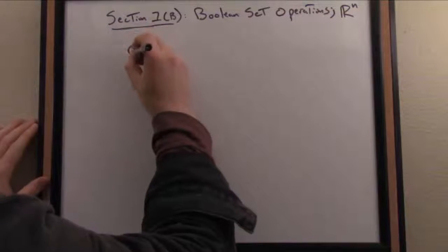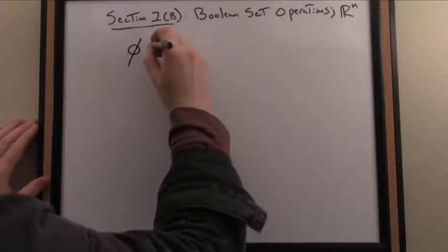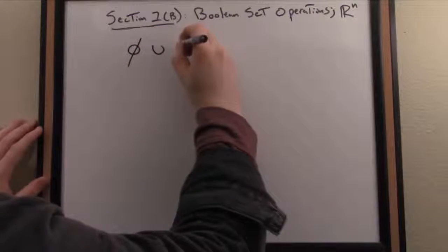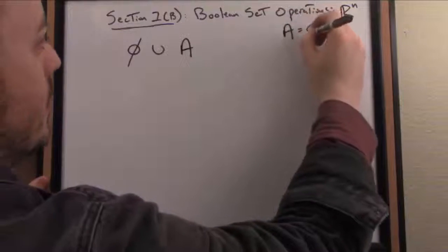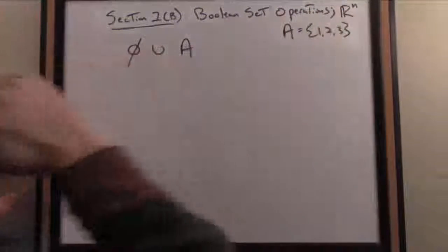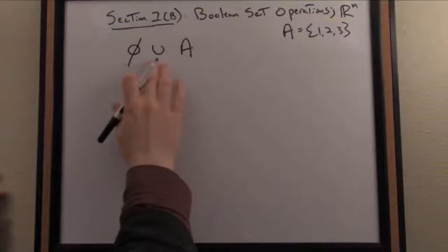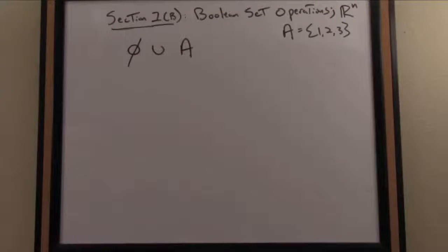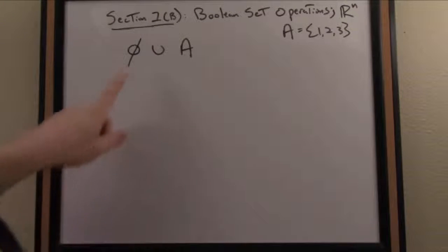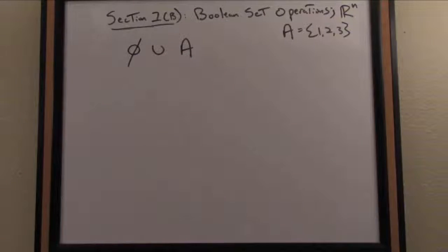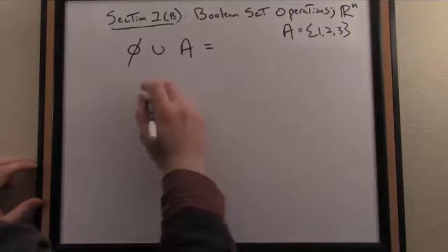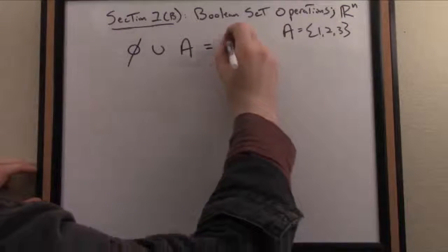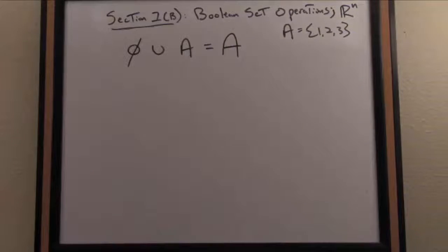Let's see how the empty set operates like an identity element with respect to sets and Boolean operations. If I take the union of the empty set with any set, say set A—this property will be true of all sets—what is the set of all elements that are either in the empty set or in set A? The empty set is empty by definition, so the union equals A.